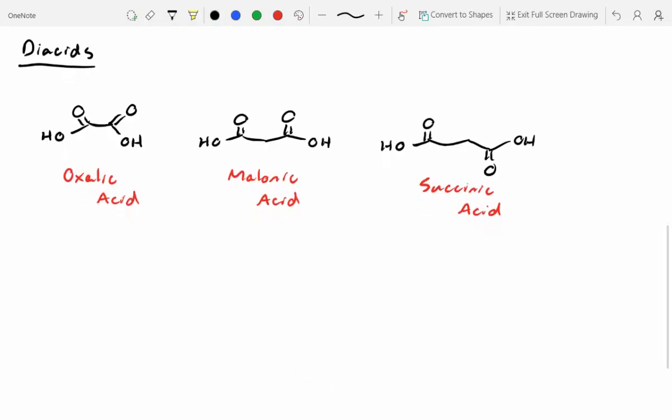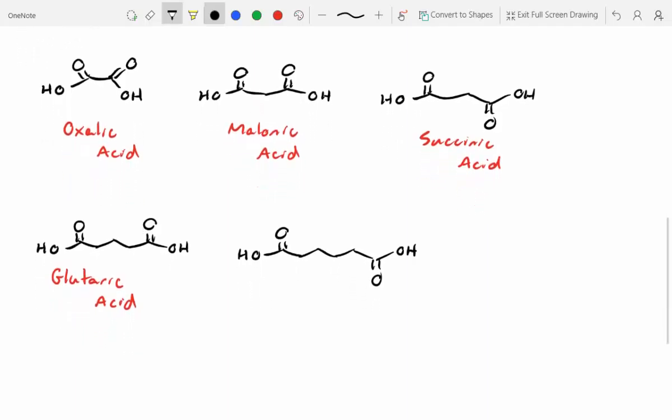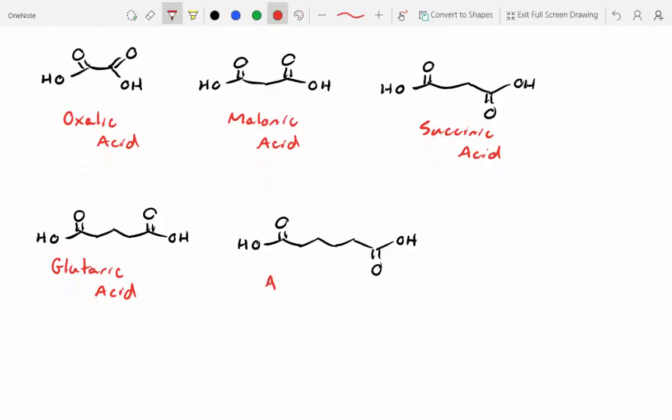You can see where this trend is going. This is called succinic acid. And then as we continue adding on carbons, we'll run into glutaric acid. And then hopefully you guys remember this one. What's this one called? Adipic acid. Adipic acid. You guys made this. This was the product we made when we cleaved open cyclohexane. And then last but not least, we've got pimelic acid.